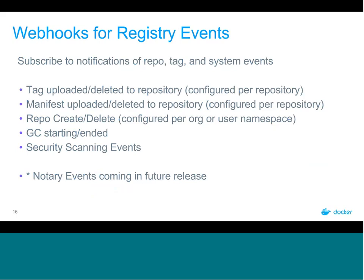For DTR, we've added webhook support for registry events. You can subscribe to notifications for specific repo, tag, and system events — such as tag uploaded or deleted, manifest uploaded or deleted, creating or deleting repos, starting and ending garbage collection, and security scanning events. For example, in a CI/CD pipeline, when a new tag is uploaded to a repo, you can trigger a container deploy on your universal control plane. Notary events will be coming to webhooks in a future release.